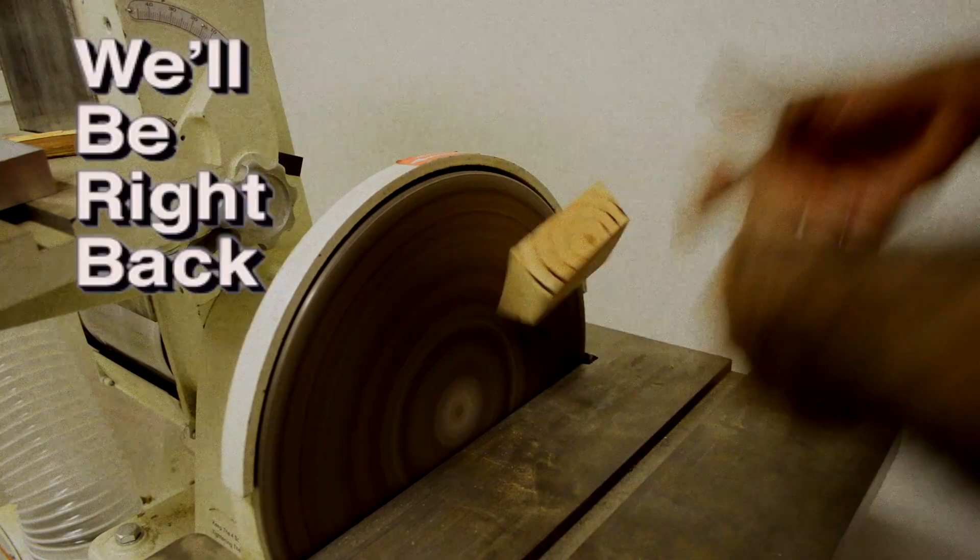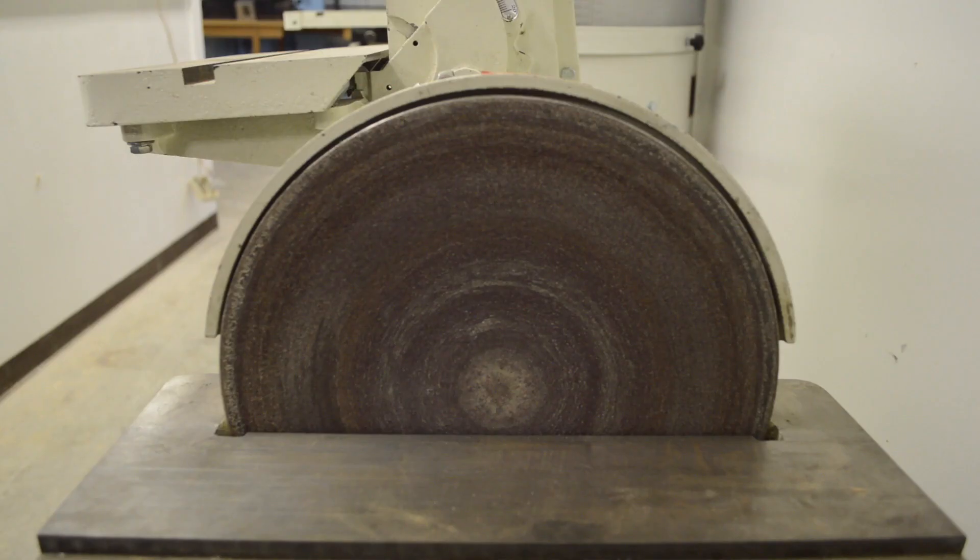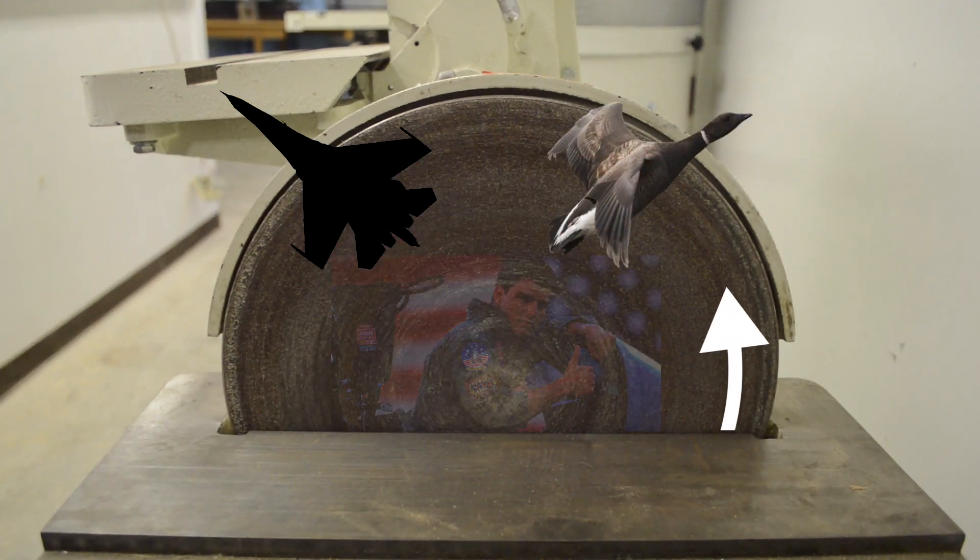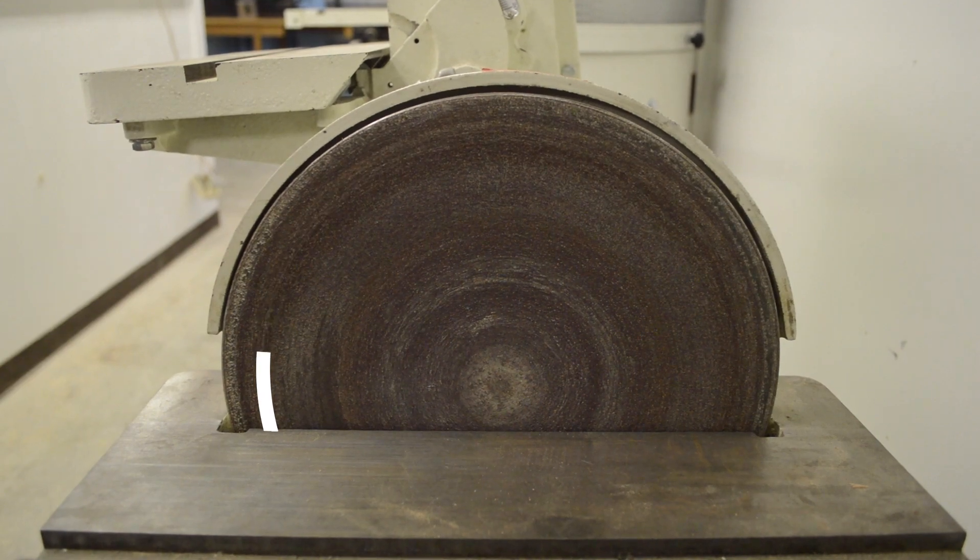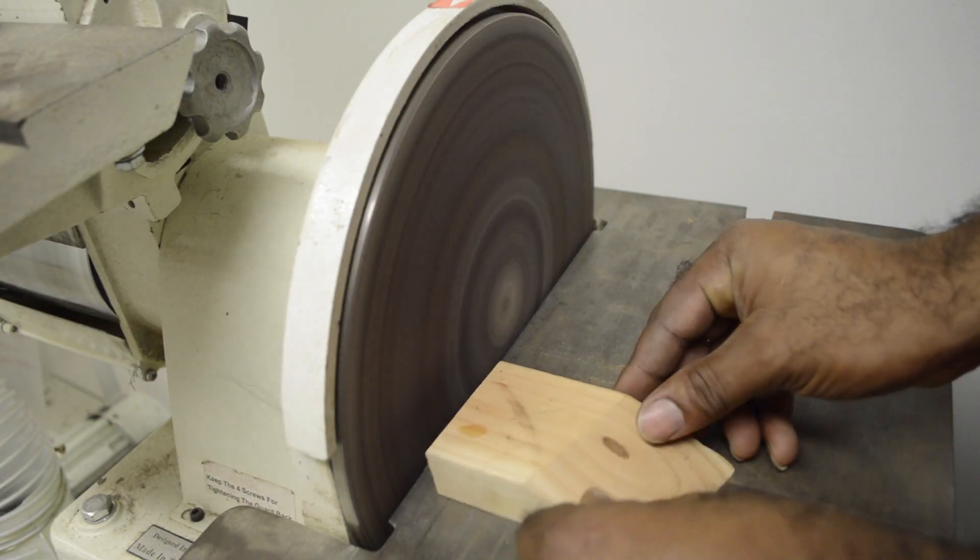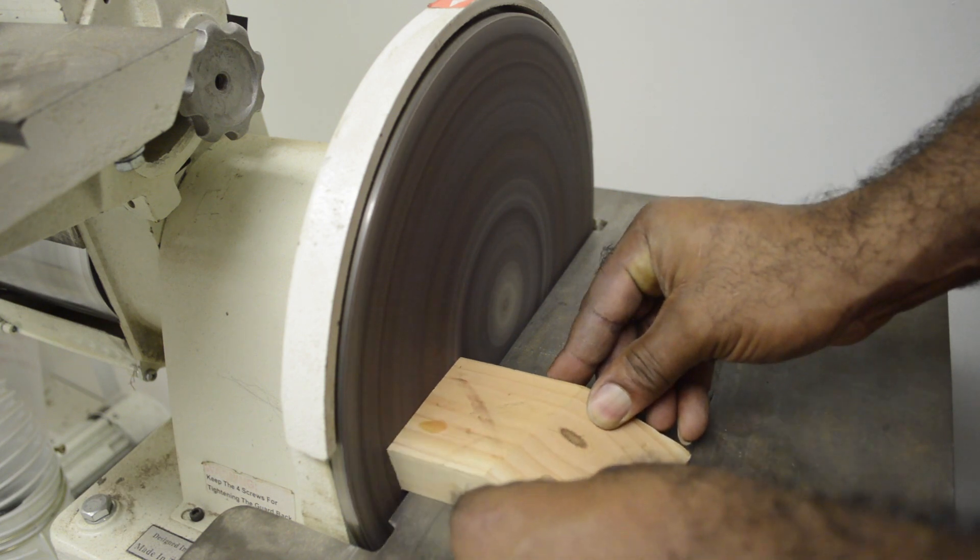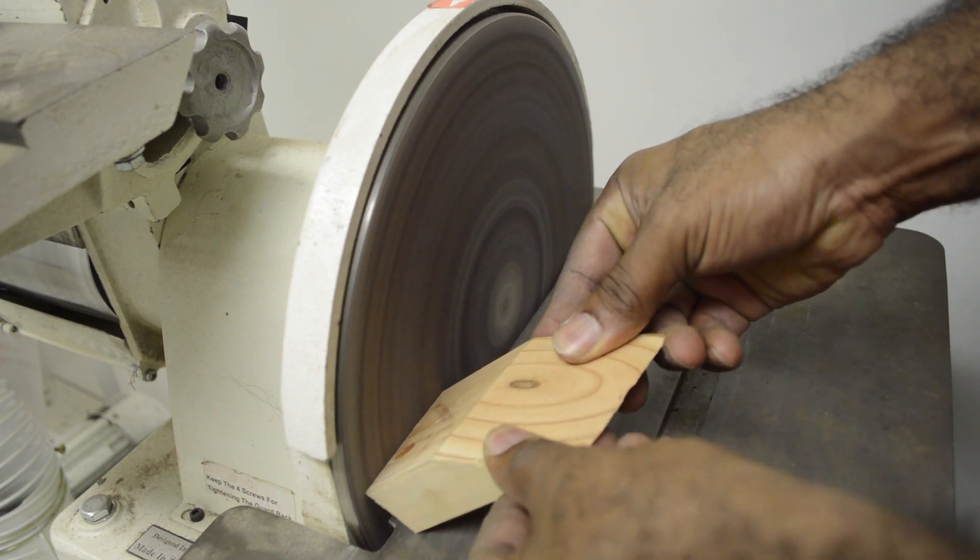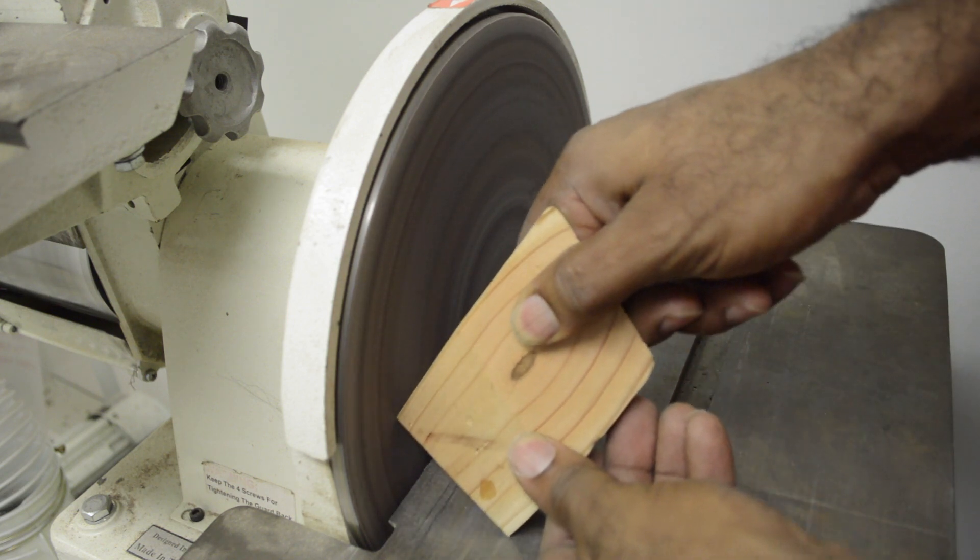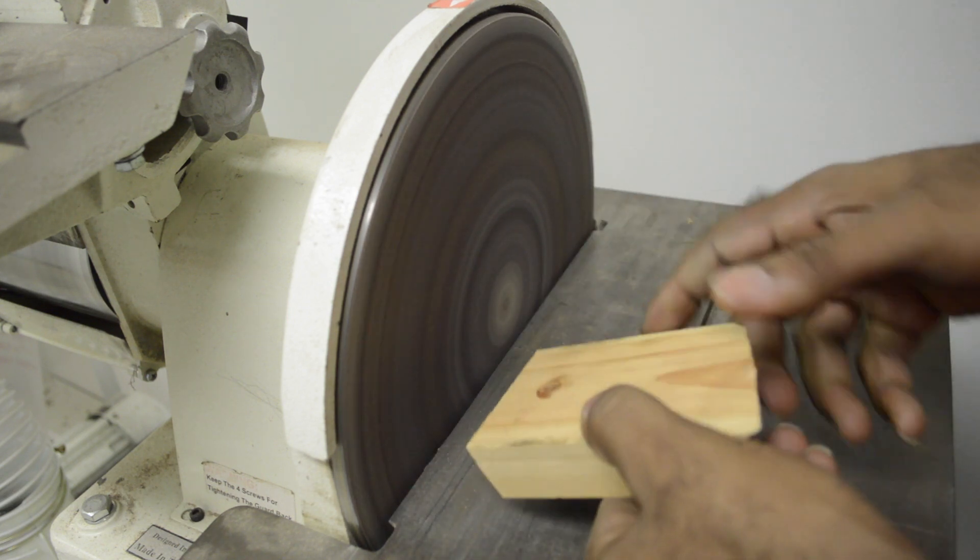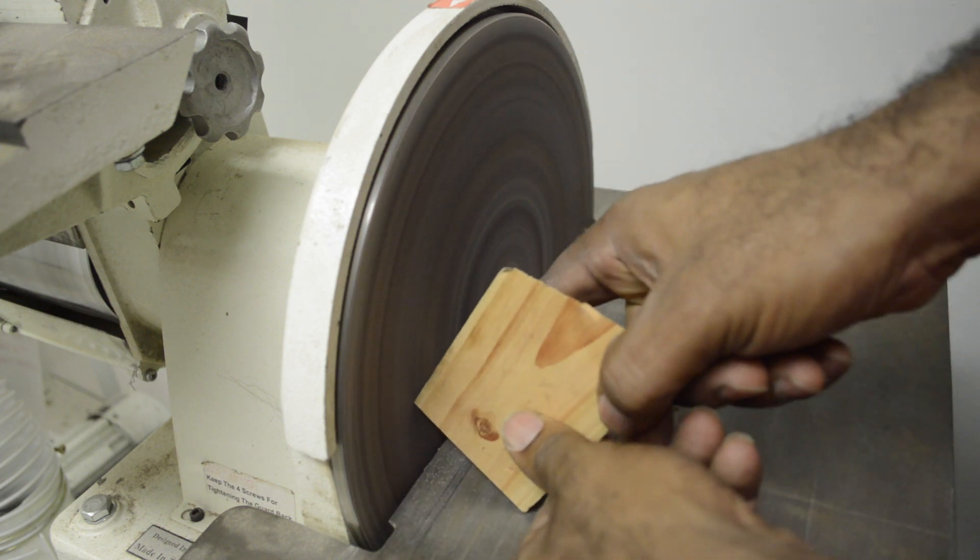When operating the disc sander, remember that the disc is rotating counterclockwise and that you should only be sanding on the left side of the disc. Again, constantly move the workpiece across the entire effective area so that you don't create tears. Using force isn't necessary, so keep an even pressure and the sandpaper will do all the work for you.